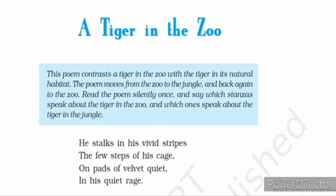Before starting the first paragraph, I would like to tell you this poem contrasts a tiger in the zoo with a tiger in its actual habitat, as you can see on the screen. The poem moves from the zoo to the jungle and back again to the zoo. Read the poem silently once and say which stanza speaks about the tiger in the zoo and which speaks about the tiger in the jungle.